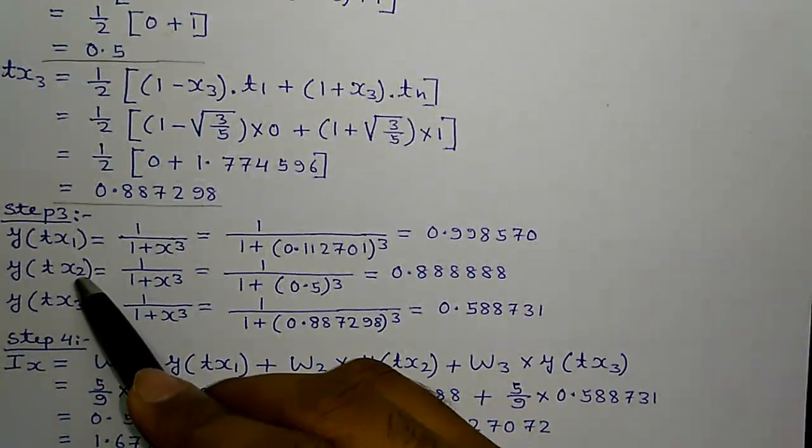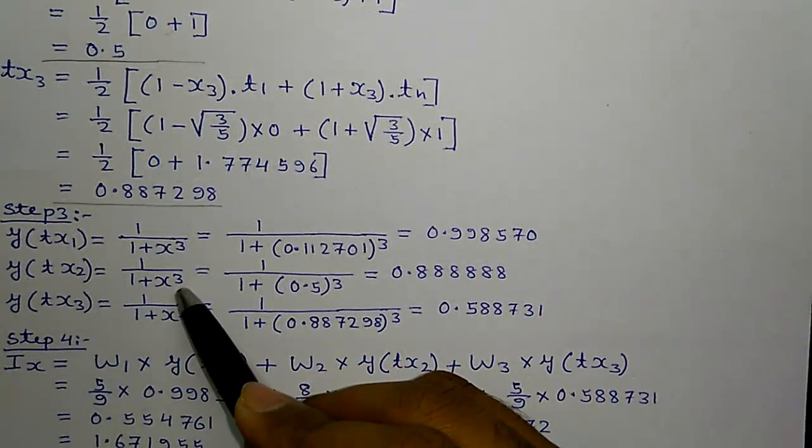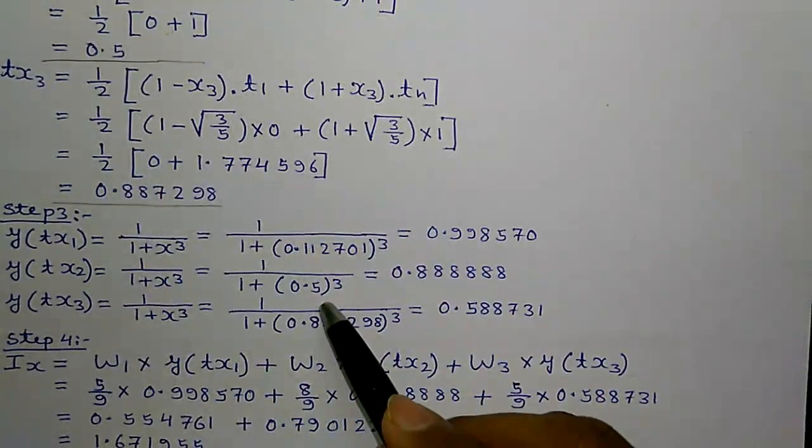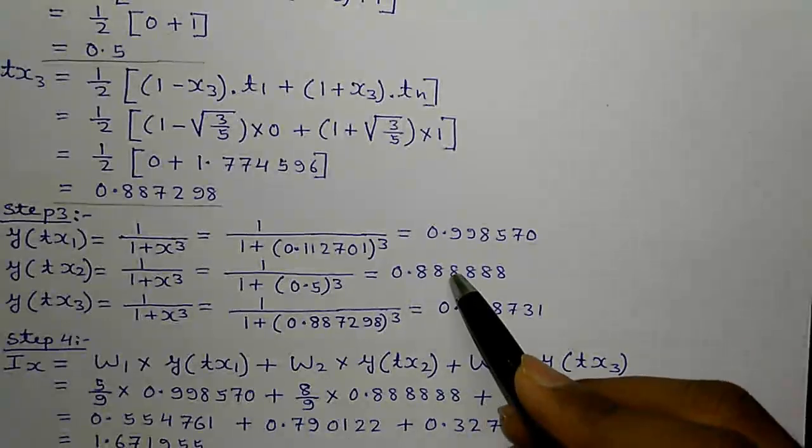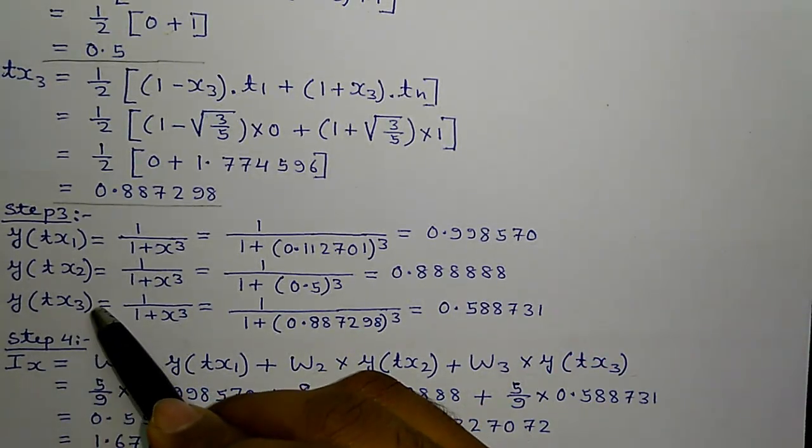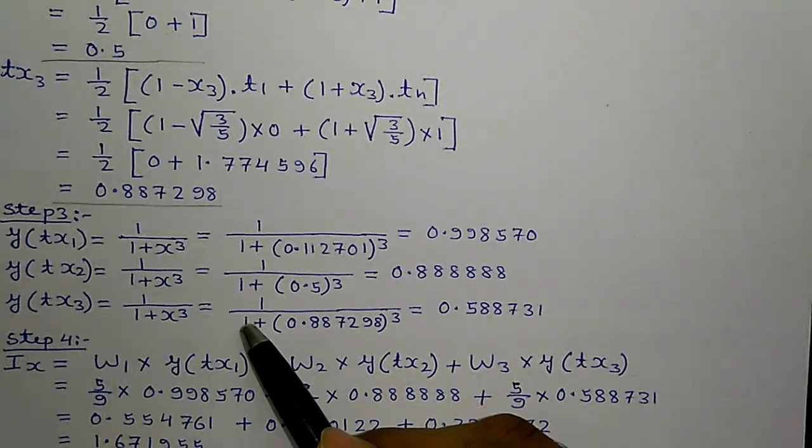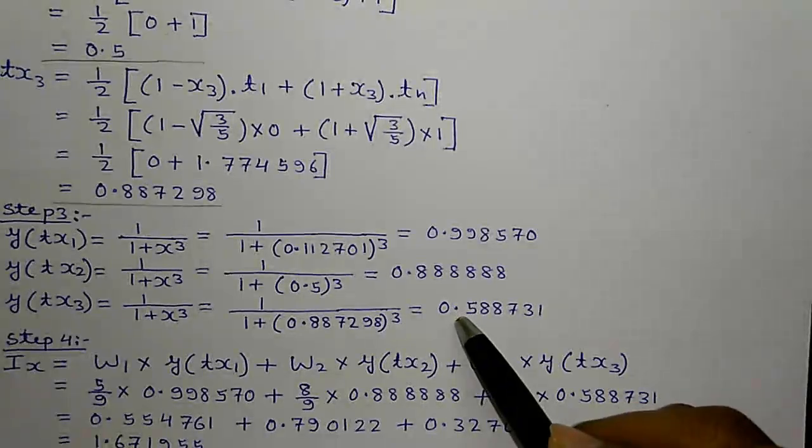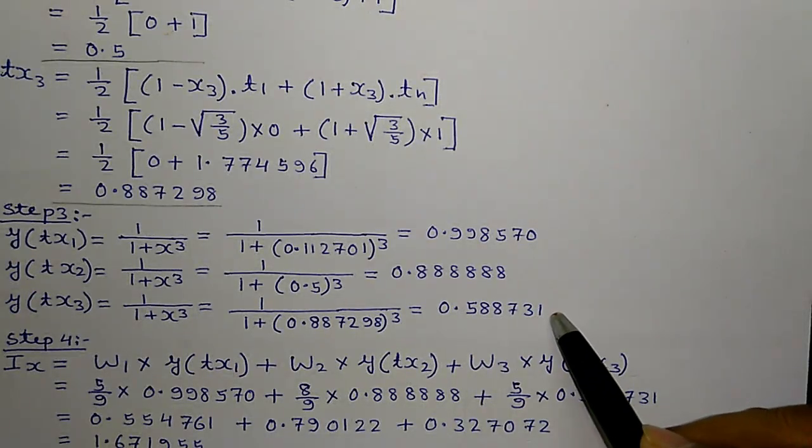Next, y of tx2 equals to 1 divided by 1 plus tx2 value cube. That's equals to 0.888888. Similarly, y of tx3 equals to 1 divided by 1 plus this value cube. That's equals to 0.588731.